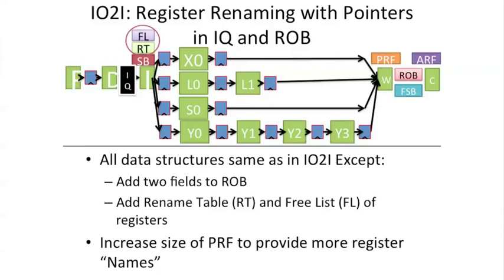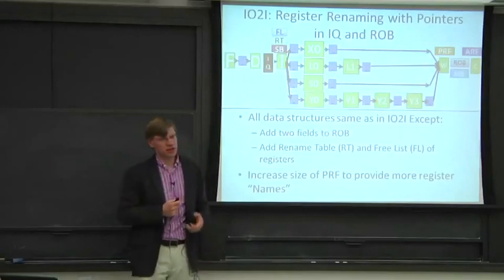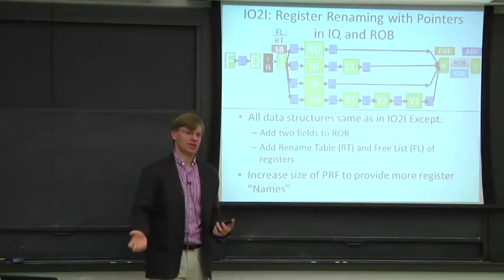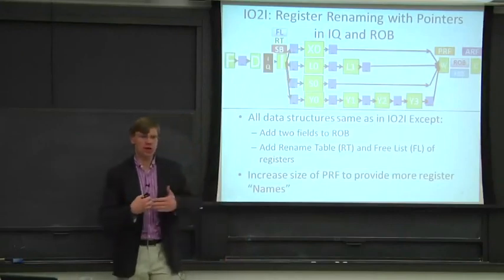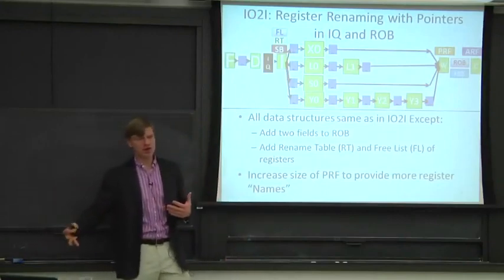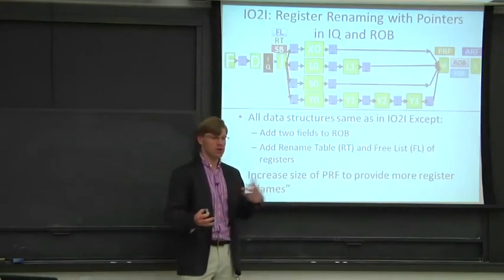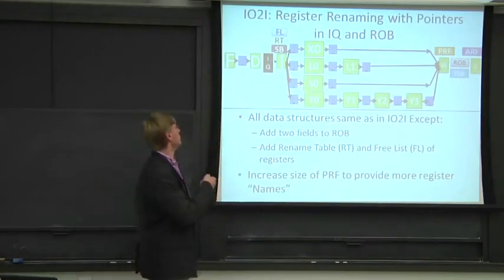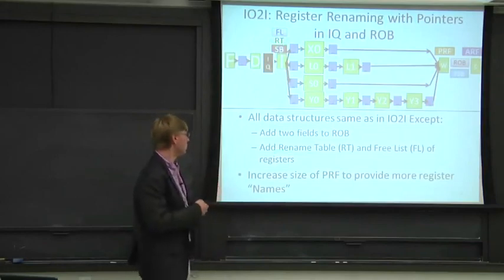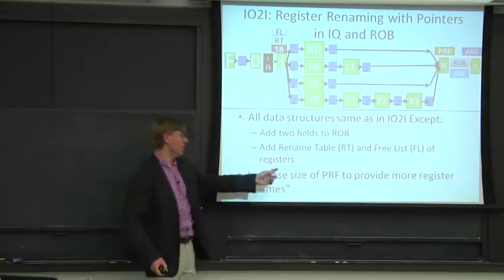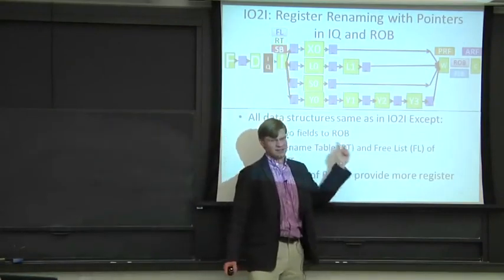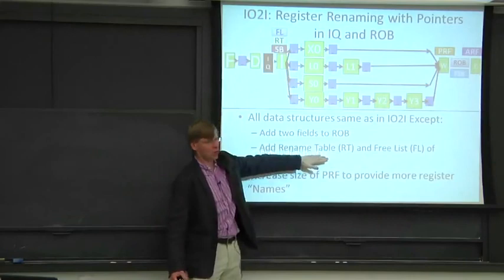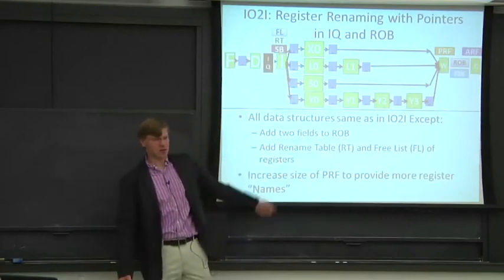The first structure we're going to add is a free list. The free list is going to keep track of physical registers that we can use. We'll probably have more physical registers than architectural registers, but we need to keep track of which ones are free, because we're going to be allocating and deallocating from the physical registers quickly as we execute. The other structure is called the rename table — sometimes called the RAT, which is Intel's nomenclature for this.